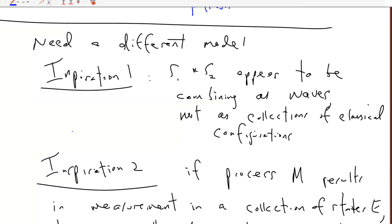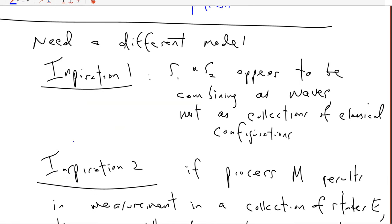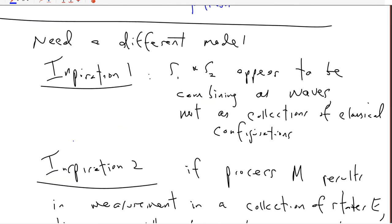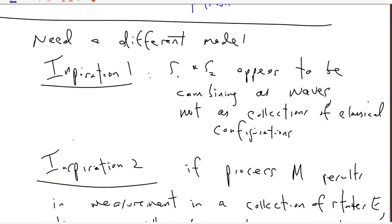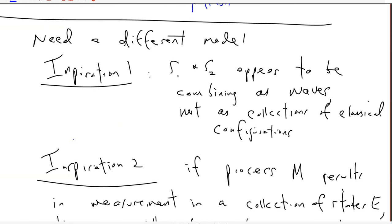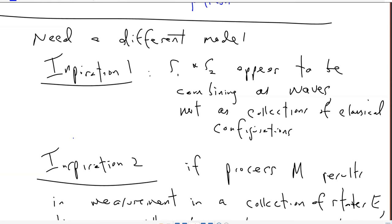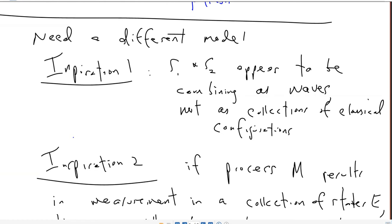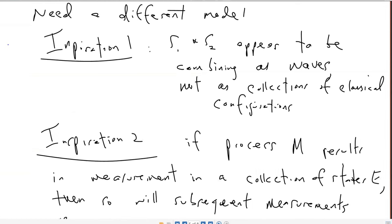Last time we were talking about straight-up probability theory and how it relates to classical mechanics, showing that predictions are unlike what you see in quantum mechanics — for example, the double-slit experiment. You see interference fringes in quantum measurements, and it's very hard to understand how that could result from a classical model. What's unique about quantum measurement is that the different possibilities for the double-slit appear to be combining like waves, not as collections of particles.